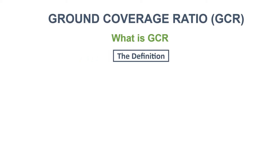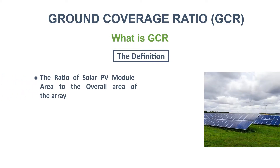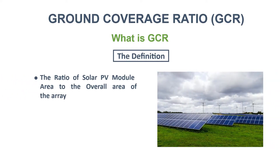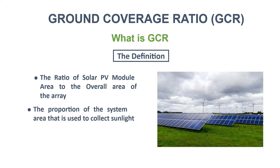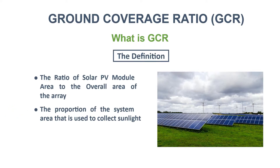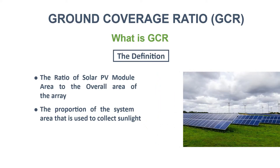GCR defines the ratio of the solar PV module area to the overall area of the whole PV array. In other words, it describes the proportion of the system area that is used to collect sunlight.